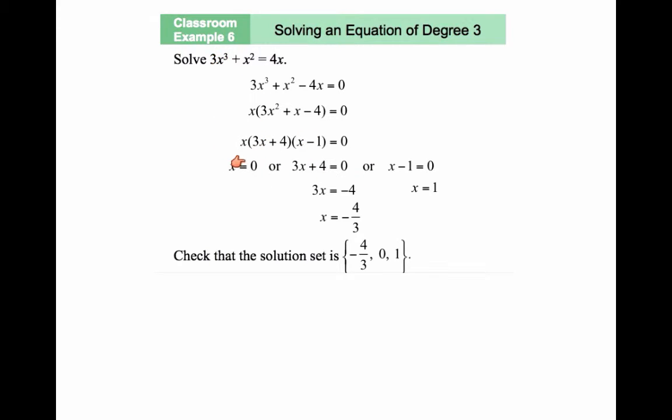And then you let each of these equal to 0. You notice this is a third order equation. We expect to get three solutions. One solution would be x equal to 0.